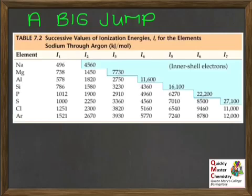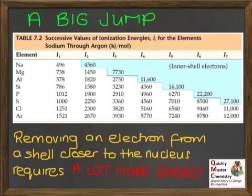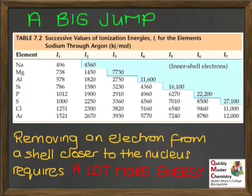The explanation is that we're seeing the point at which you start removing electrons from a shell closer to the nucleus, having emptied the outer shell. For sodium, which is in group 1, there's only one electron in the outer shell. Once it's removed, we have to take electrons from a shell closer to the nucleus — less distance, less shielding, so bigger attraction between the positive nucleus and the negative electrons, hence a lot more energy needed to remove those electrons.